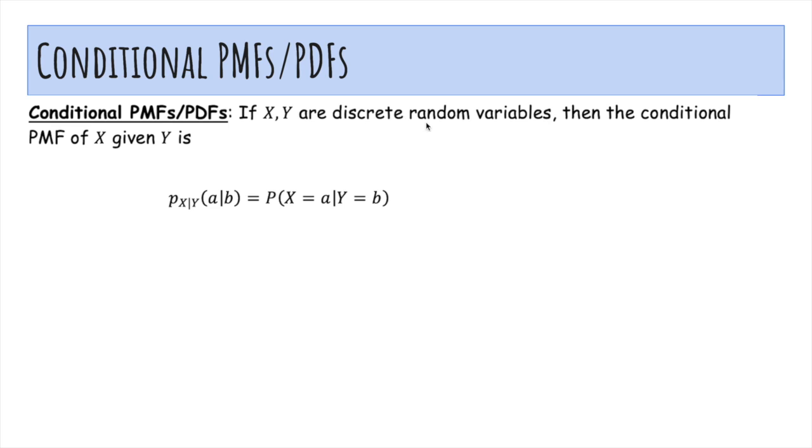So if X and Y are discrete random variables, then the conditional PMF of X given Y is denoted p_{X|Y}(a|b), which is the probability X equals a given Y equals b. And the definition of conditional probability says it's the probability that X is a and Y is b over the probability Y is b.